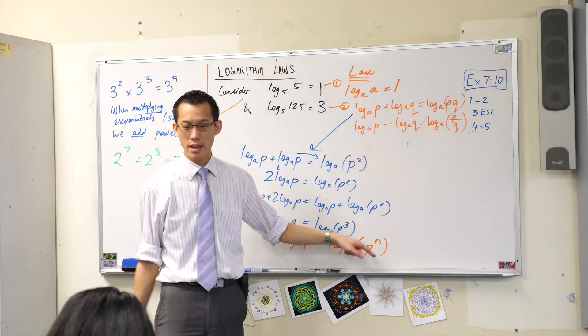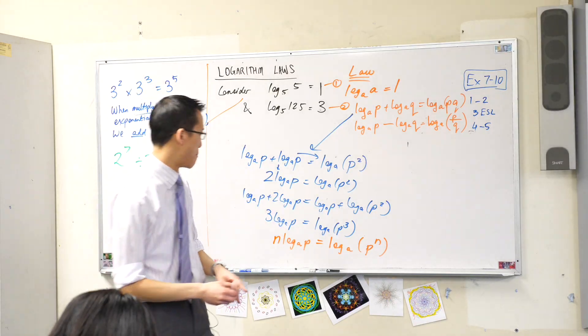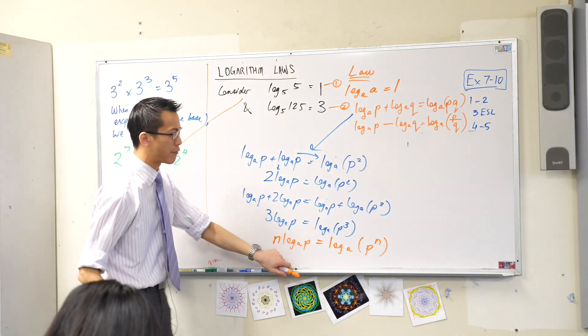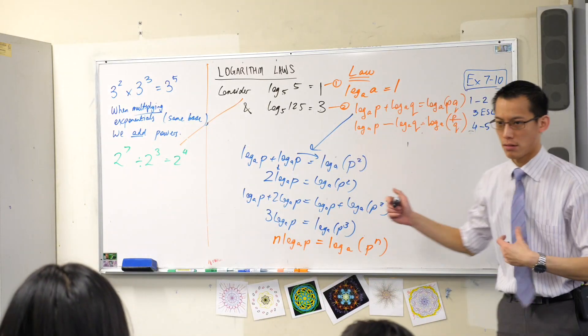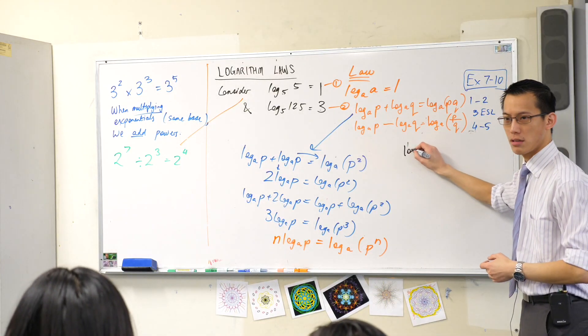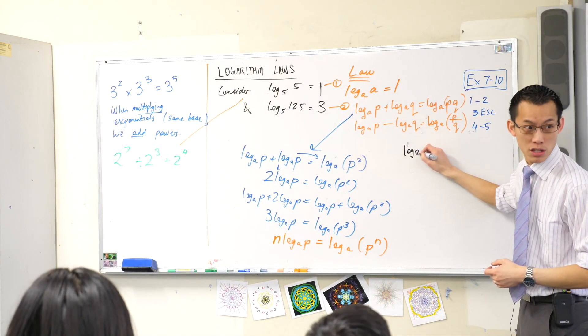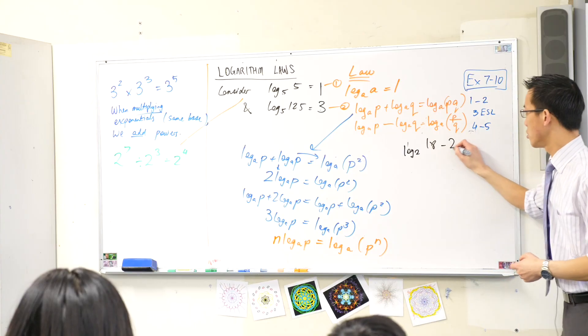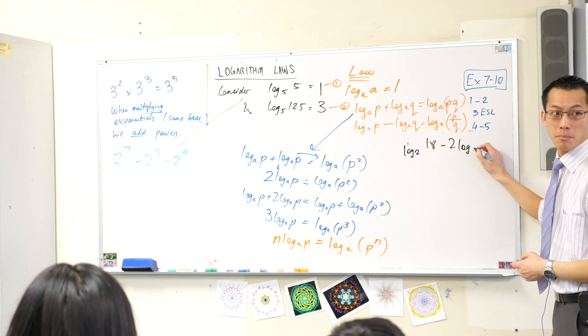Multiplying logs turns into a power. It keeps climbing up. Now a lot of you ask me about question M. Can someone read question M to me, please?